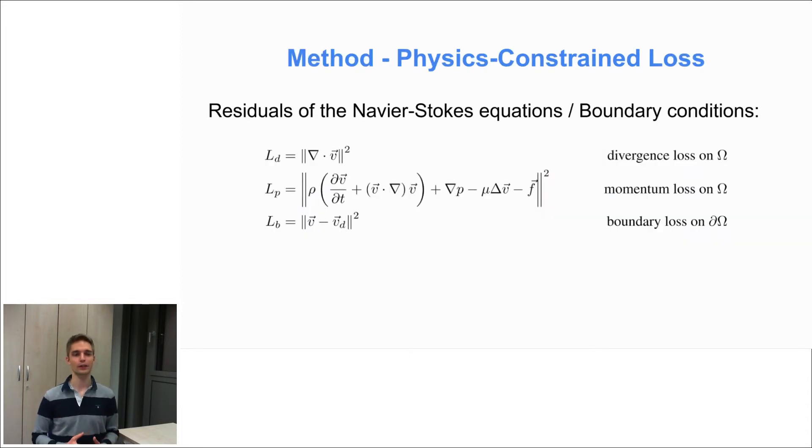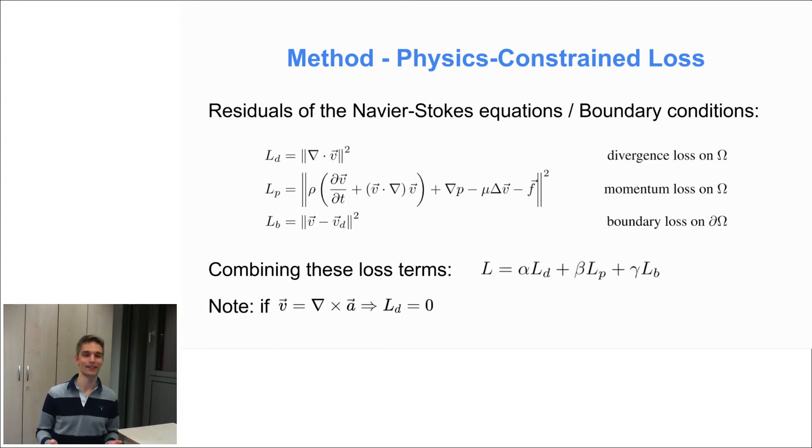To train our fluid model we chose a physics-constrained loss which is basically the mean squared residuals of the Navier-Stokes equations and the boundary conditions. And the final loss term is then just the weighted sum of these individual loss terms with hyperparameters alpha, beta, and gamma. And note that if we use a vector potential then the incompressibility equation is already fulfilled, so we can ignore the divergence loss term.